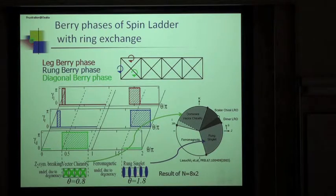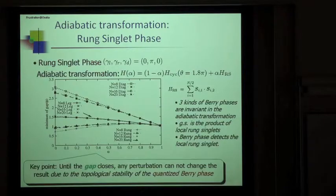In addition to the rung singlet phase, the vector chirality phase is here. After the phase identification, we try to use the adiabatic transformation to decouple the model defined here. The key point here is until the gap closes, any perturbation cannot change the result, which means a Berry phase, due to the topological stability of the quantized Berry phase.